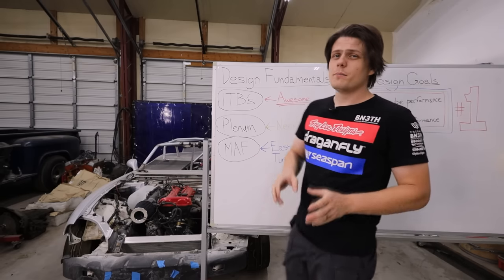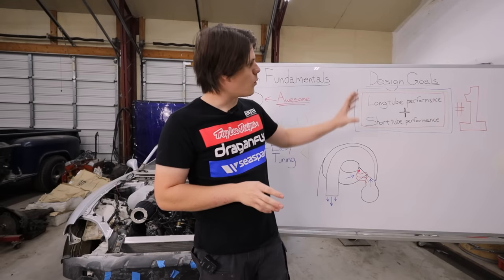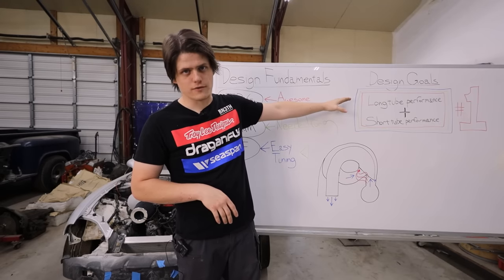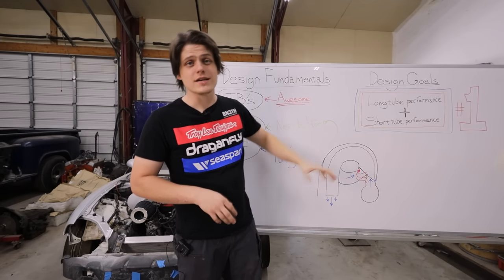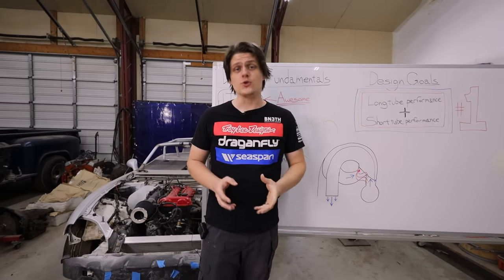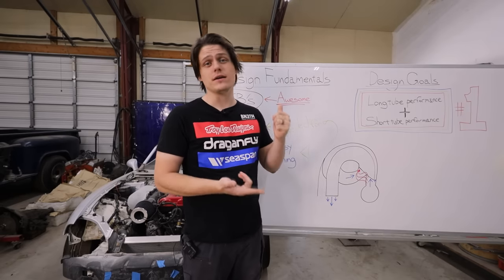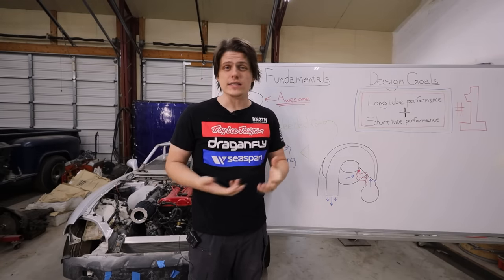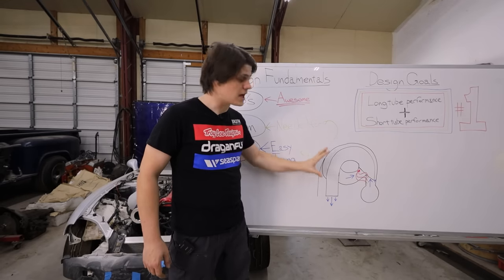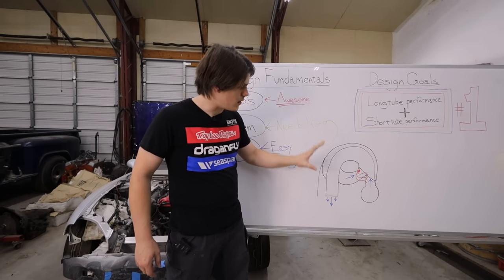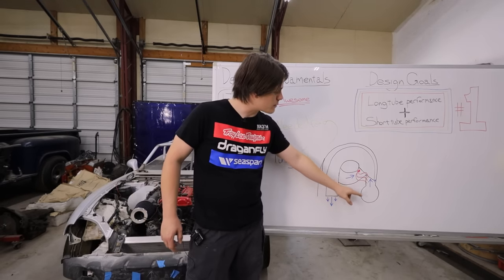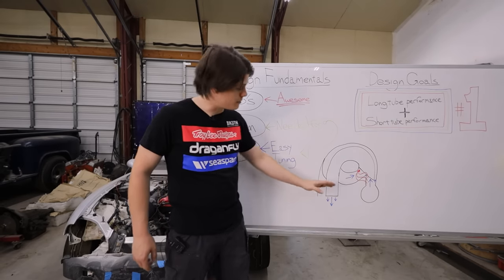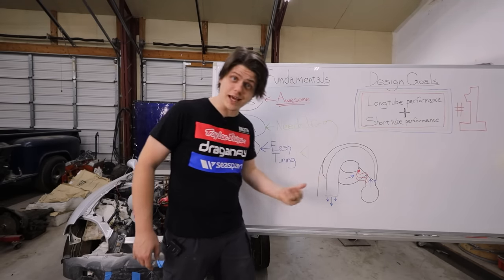The one and only goal for this system is to combine long-tube performance with short-tube performance. I don't want to compromise between the two - I want both. Whether that has to be a solenoid system or whether we can make it all solid state, let's take a look at the design we've already run through CFD. What we found is that the air is more likely to take the red path than to go all the way around the outside of the plenum and into the runner on the back side like we want.